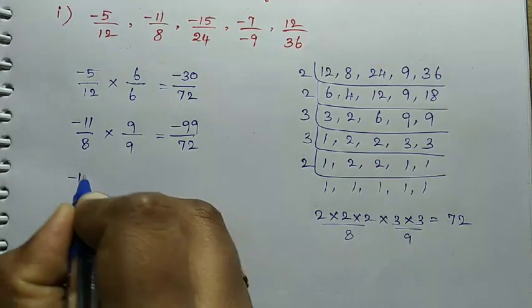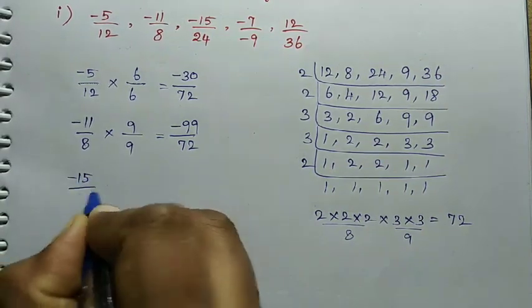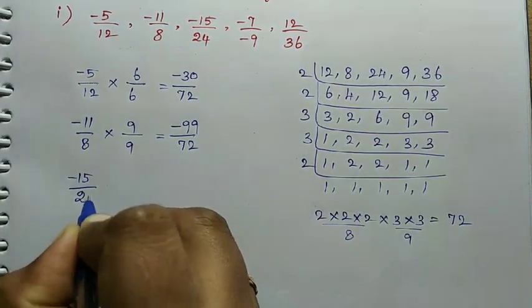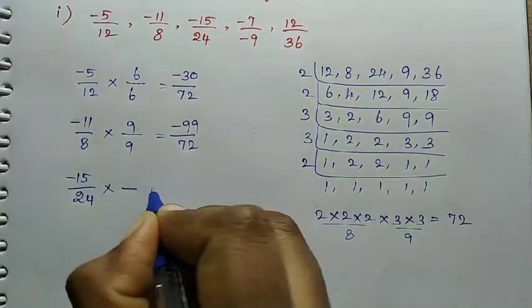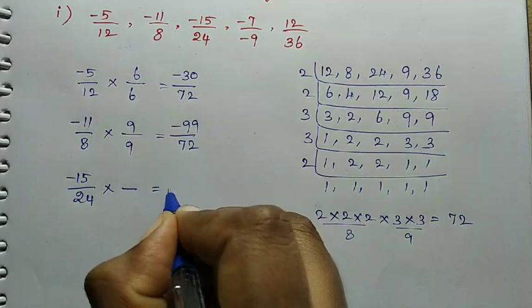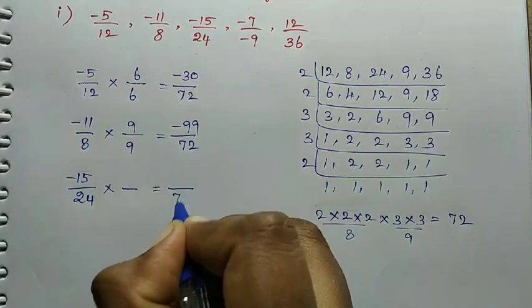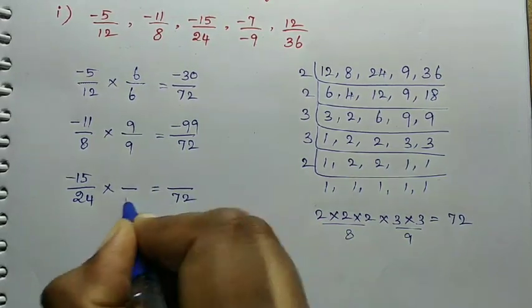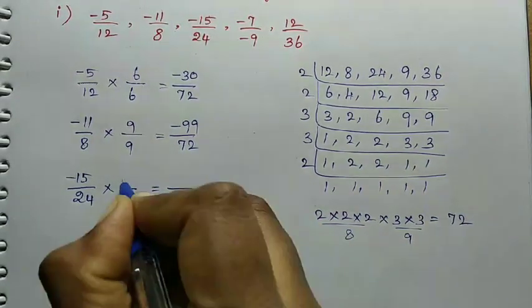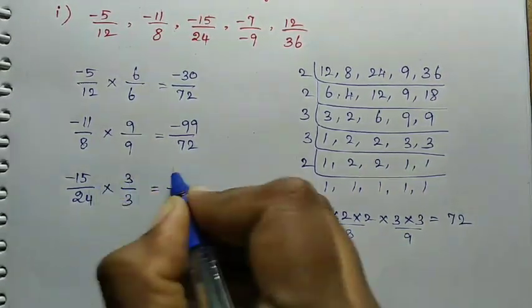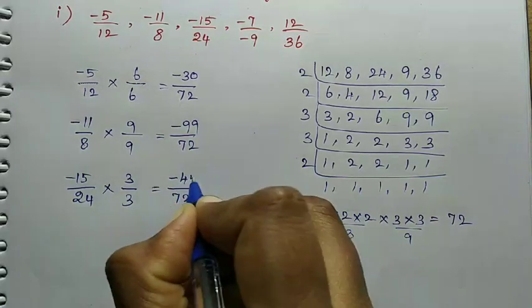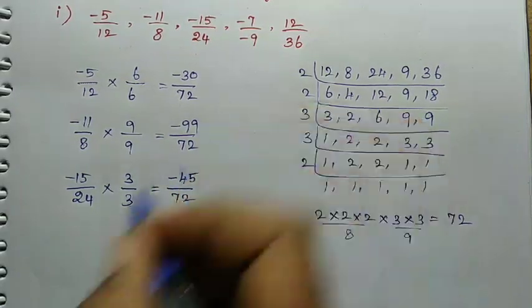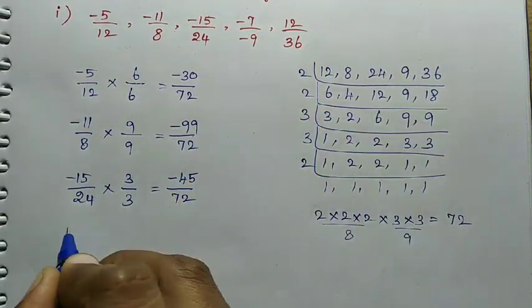Next: minus 15 divided by 24. Since 24 is the denominator, to get 72 we multiply by 3. Numerator: minus 15 multiplied by 3 = minus forty-five. So minus 15/24 becomes minus 45/72.